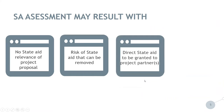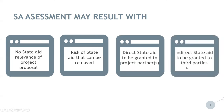Third, the State Aid assessment may result in direct State Aid being granted to project partners. In this case, the entire ERDF budget allocated to the concerned partner is regarded as State Aid and is granted under the General Block Exemption Regulation (GBER) or, in exceptional cases, under the de minimis regulation. These two options are applied to ensure compatibility with the internal market. Fourth, there may be indirect State Aid to be granted to third parties outside the project partnership. In this case, conditions setting a threshold to the aid granted to third parties will be set, and the General Block Exemption Regulation will be applied.